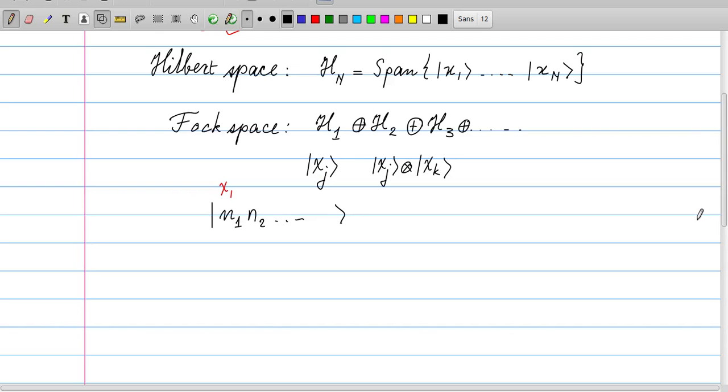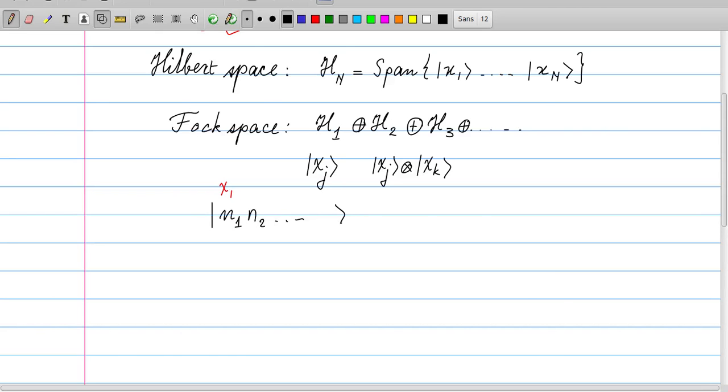So we organize the basis vectors according to the basis vectors of the one particle space, and we just put here numbers which give the occupation of that state. Now this way of reorganizing the basis vectors can be illustrated with a very nice example. Suppose we have a drawer cabinet like the one on the left, and each drawer corresponds to a state chi. These states are called orbitals or spin orbitals if they include spin degrees of freedom. Here are the particles, and we can put one particle in drawer one, we can also put two particles in drawer one, provided they are bosons.